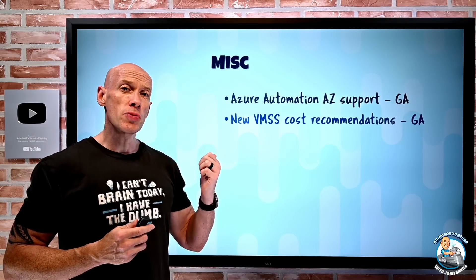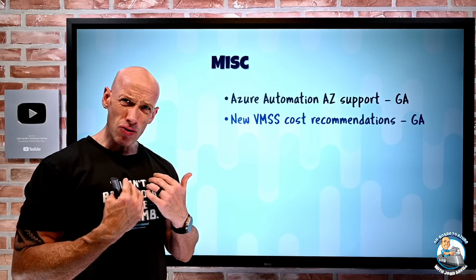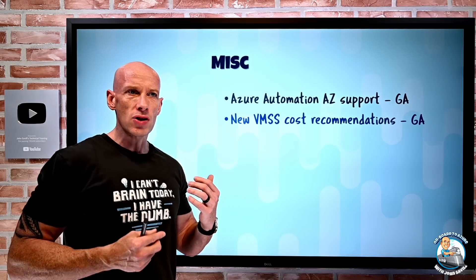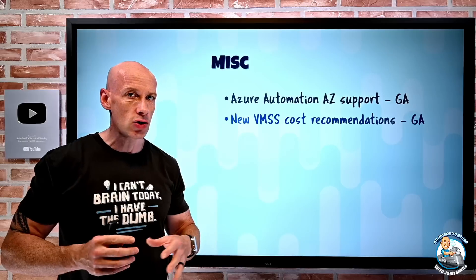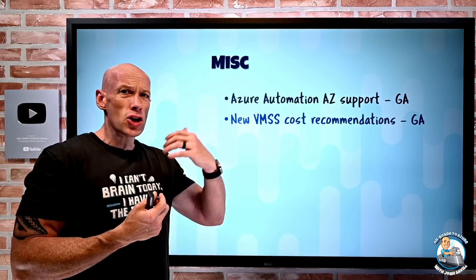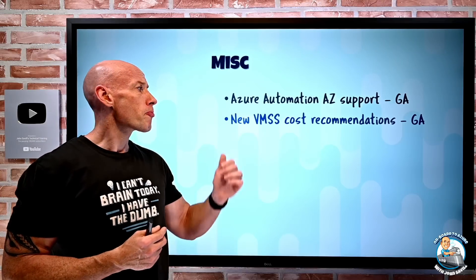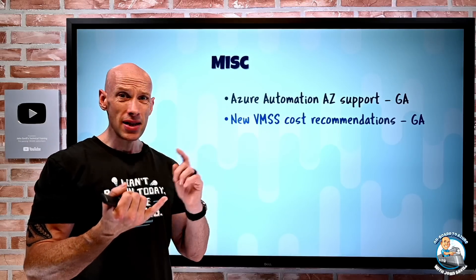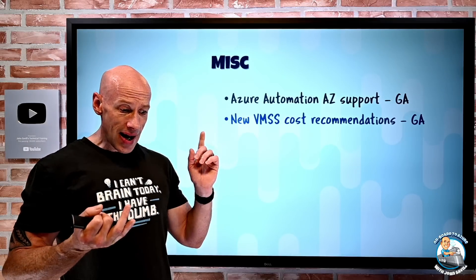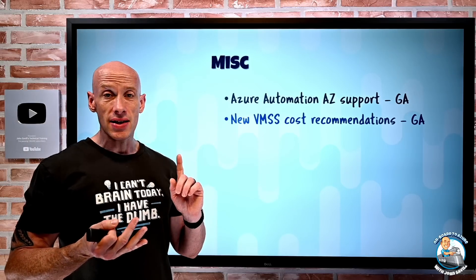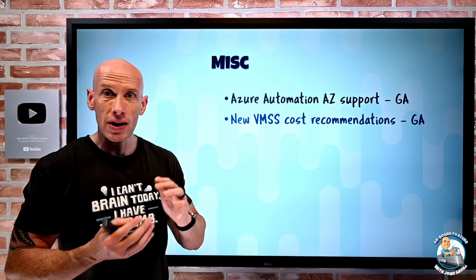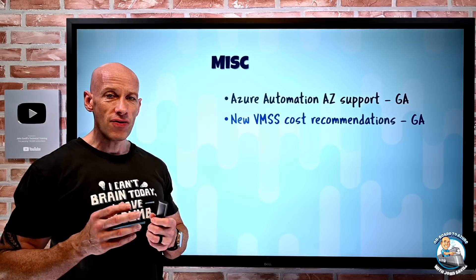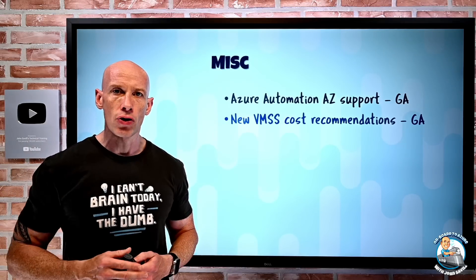There's a new virtual machine scale set cost recommendation. Azure Advisor has been getting massive enhancements, with recommendations around cost and performance applying to a huge number of resources. Now it's going to do that for virtual machine scale sets as well — giving recommendations like this doesn't need to be running, there are unused instances, the instance sizes or SKU is wrong, or the scale settings are wrong. It will give you a whole set of recommendations to tune and optimize so you only have — and therefore pay for — what you really need.